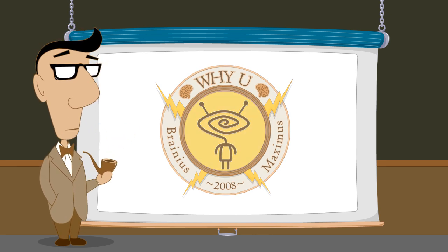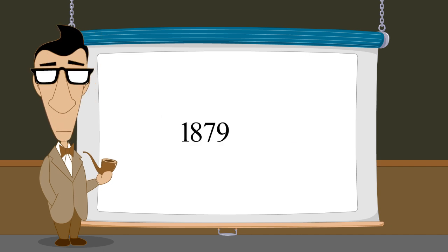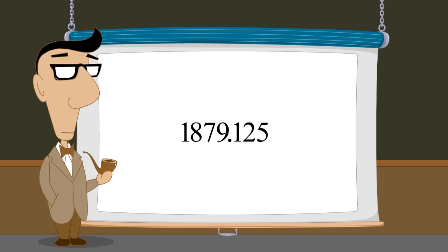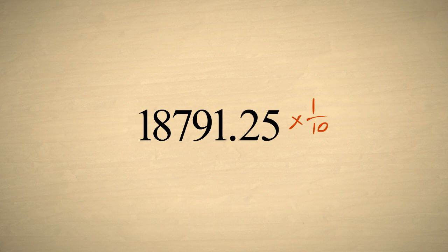In our lecture on the decimal number system, we saw that decimal numbers can represent fractional quantities by adding a decimal point to the right of the ones digit, followed by any number of digits. Multiplying a decimal number by ten, which can also be written as ten to the first power, increases the value of each digit by a factor of ten, shifting the digits one column to the left. Likewise, multiplying a decimal number by one tenth, which can also be written as ten to the negative first power, decreases the value of each digit by a factor of ten, shifting the digits one column to the right.